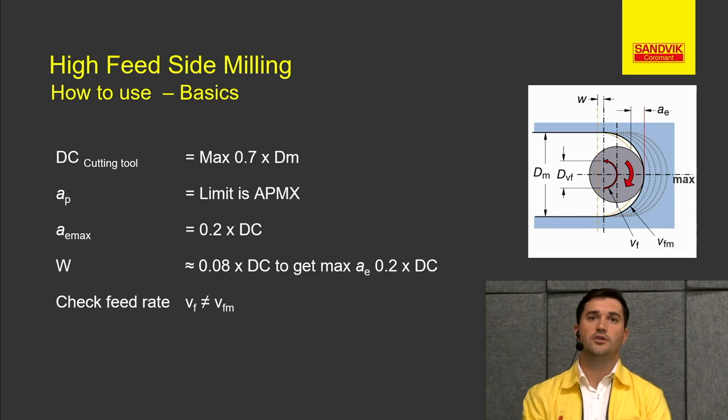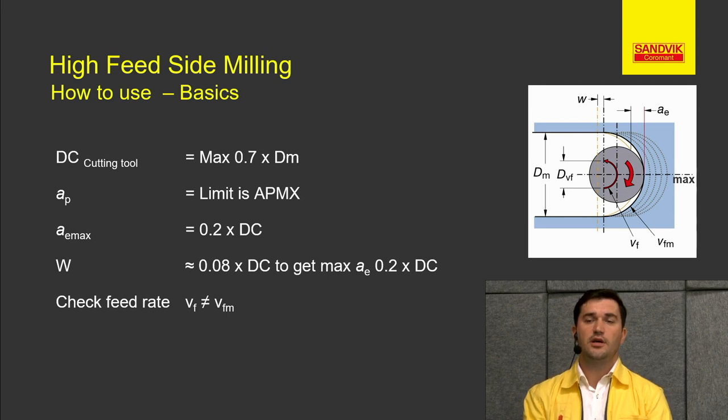A little more information on how to use and the basis of high-feed side milling. If you machine a slot with the method of high-feed side milling, the golden rule to remember is that the diameter of your cutting tool should not exceed 70% of your slot diameter.